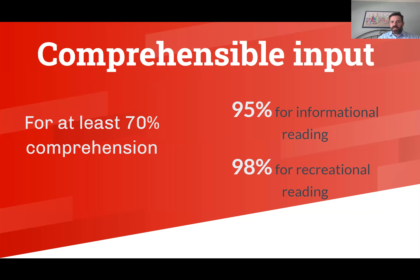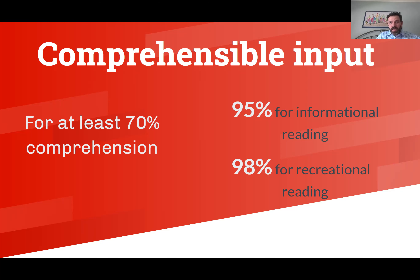Experts suggest that for informational reading — which is most of the reading we do in school — we need to know 95 percent of the words in a text in order to understand the meaning it's trying to teach us. If we're doing pleasure reading, reading for fun or reading stories, we should know 98 percent of those words. This can seem like a lot, but keep in mind that the majority of words students encounter in these texts are going to be high frequency words.